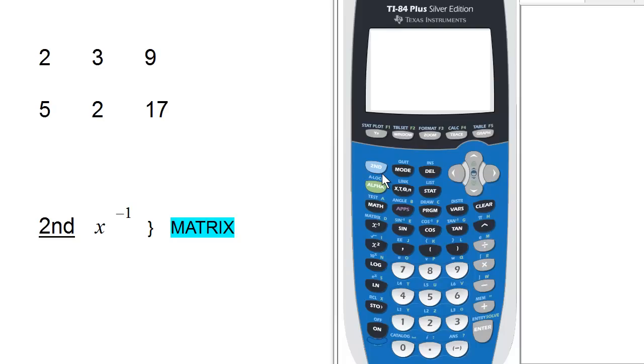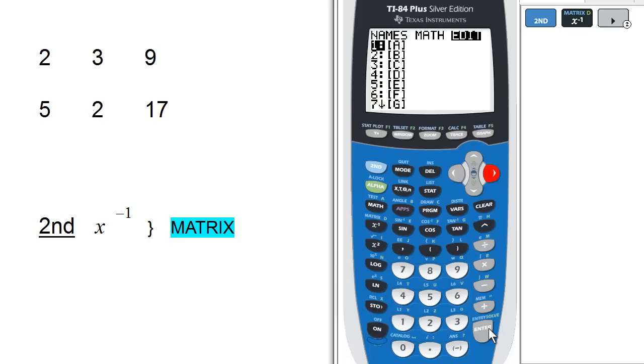First, we go to the matrix screen by pressing 2nd and x to the negative 1. The menu here allows us to choose Names, Math, and Edit. We will choose Edit and select Matrix A.